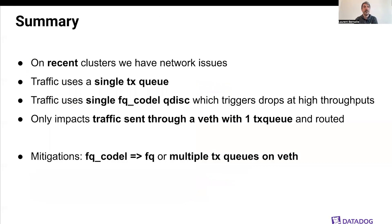Let's summarize. On recent clusters, we have a network issue: traffic is using a single transmit queue for egress. Because we use FQCoDel, this impacts maximum throughput under high load due to packet drops. It only impacts traffic coming through the VF device relative to the host. As mitigations, we have two options: change FQCoDel to FQ — better but far from perfect — or use multiple TXQs on the virtual ENI device, which would mean modifying the CNI code. It also seemed weird because it used to work completely fine.